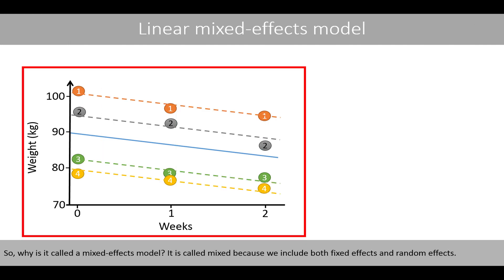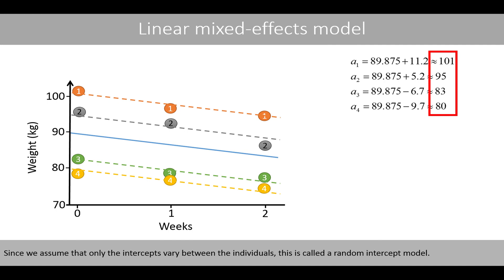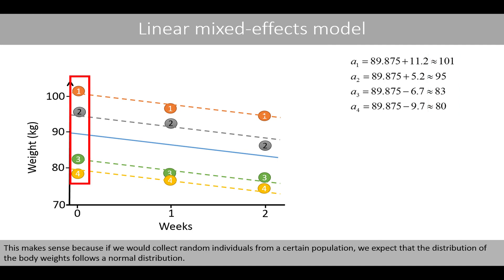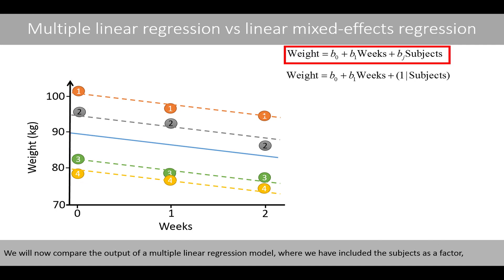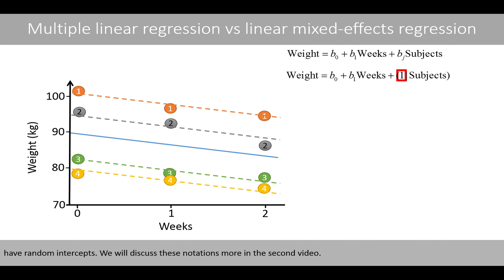So why do we call this a mixed effects model? It is called mixed because we include both fixed effects and random effects. The differences from the overall intercept can be seen as a random variable, where we assume these values are randomly distributed with a mean of zero and a variance estimated by the model. Since we assume that only the intercepts vary between individuals, this is called a random intercept model. This makes sense because if we collected random individuals from a population, we would expect the distribution of body weights to follow a normal distribution. We will now compare the output of a multiple linear regression model — where subjects are included as a factor — with a mixed effects model where subjects are treated as a random factor. This notation means that the subjects have random intercepts.